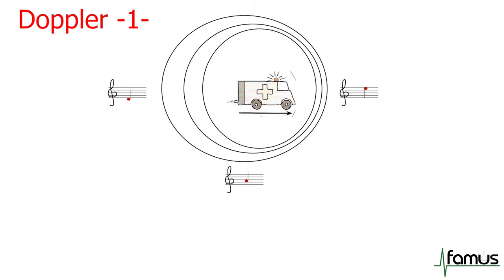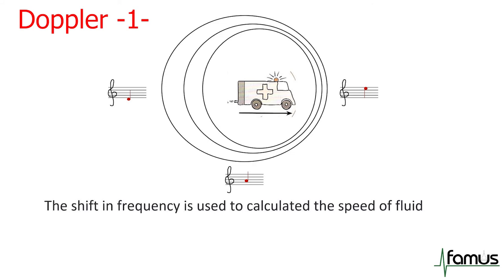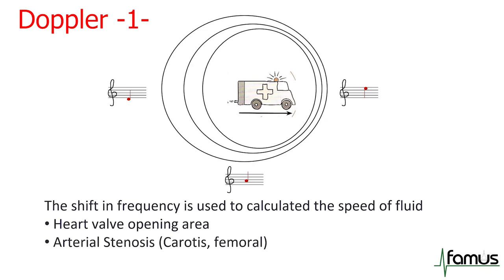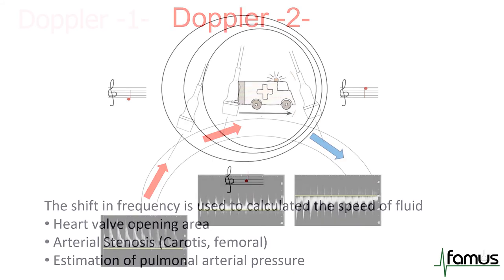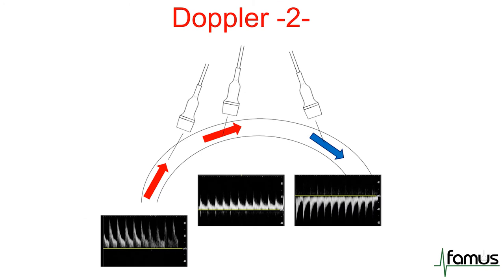We can use Doppler in ultrasound. Everyone knows that when an ambulance drives towards you, you hear a high-pitched noise; as it passes, the pitch lowers; and as it moves away, you hear a low-pitched noise. Doppler uses a shift in frequency to calculate the speed of fluids. This is used to calculate heart valve opening areas, arterial stenosis, and estimation of pulmonary arterial pressure. Color Doppler is used widely — by definition, red blood flow should flow towards our ultrasound probe and blue blood flow away.